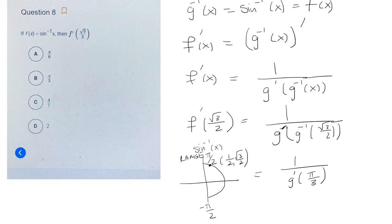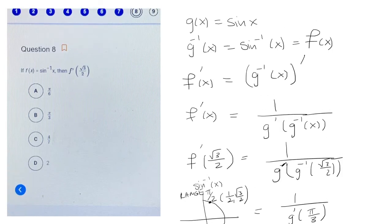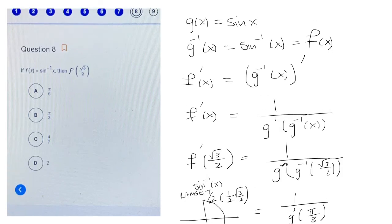And now we just need to take the derivative of g and plug in pi over 3. Well, g we set as sine of x, so the derivative of g is cosine of x.